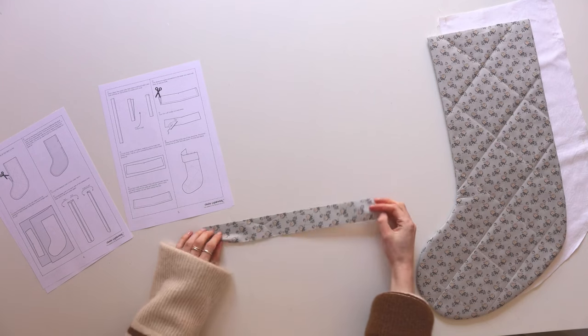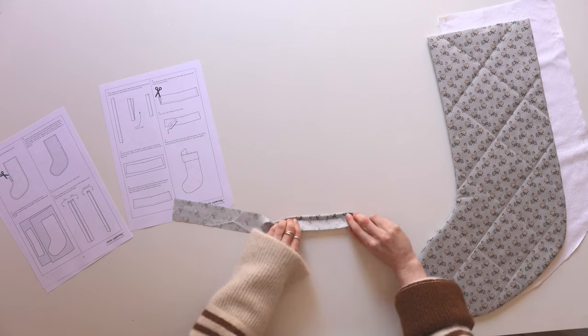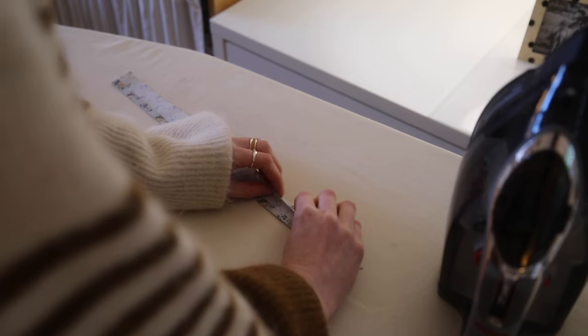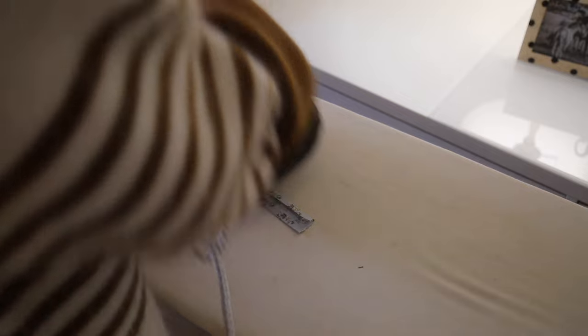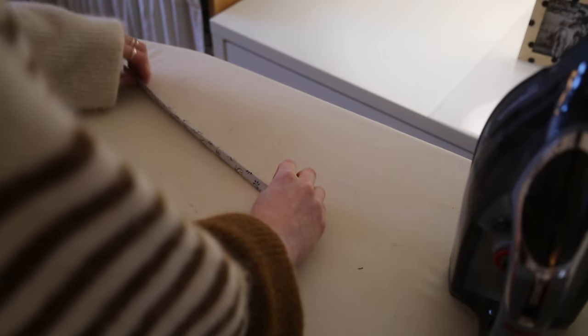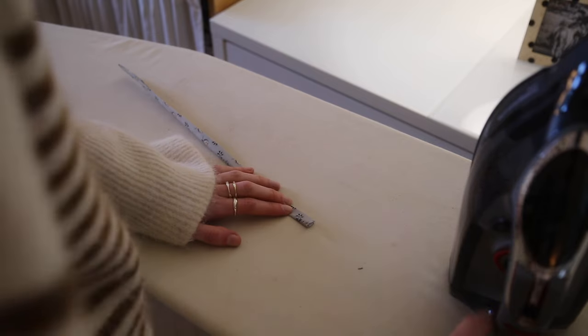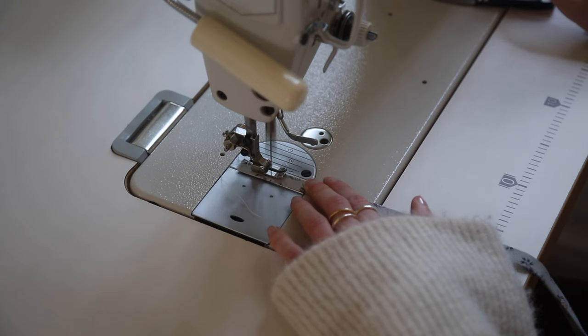Now we're going to move on to creating the hanging loop. So to create this you're going to want to fold the long edges in by one centimeter and press that down, and then fold in half and press again. Then take it over to your sewing machine and stitch it closed.